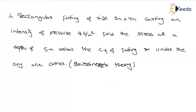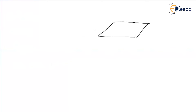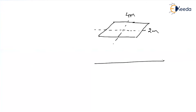Now let me represent the given data. I am drawing the plan and also the cross section at the same time. Here is the footing with dimensions 4m by 2m. Seeing it in 2D, I am considering the 4m dimension. We have to find stress at a point below the CG — let us call this point 1 — and also at any one corner, which we will call point 2.